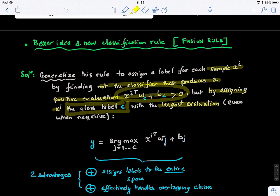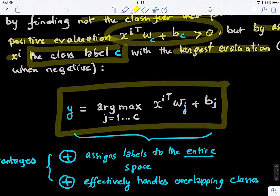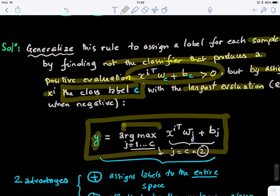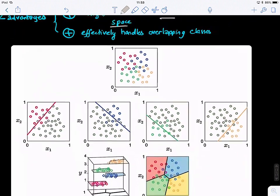So this is the new equation here that works well, and here, what we're looking for, we're looking to predict the label by taking the maximum value over all sets of classifiers of this quantity, and then once we find the C, J equals C, for example, equals 2, I know that this is actually the label of my class. So it's quite a simple idea, and this is what we call the fusion rule. So this is the fusion rule for linear classifiers. It has two advantages, the first one, it assigns labels to the entire space, and it also can effectively handle overlapping classes as you can see here.